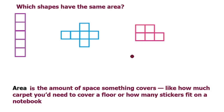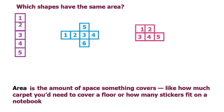So let's look at these individually. If we look at this shape, let's count the number of squares — this has one, two, three, four, five. And if we look at this one, it has one, two, three, four, five, six. And this one has one, two, three, four, five.